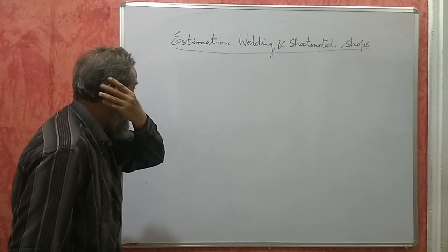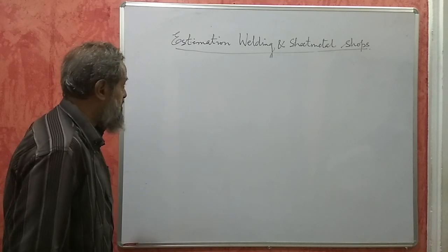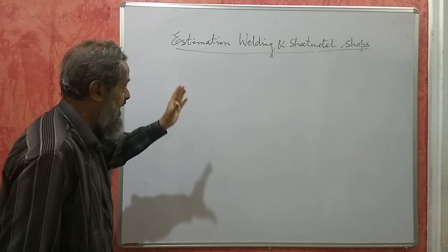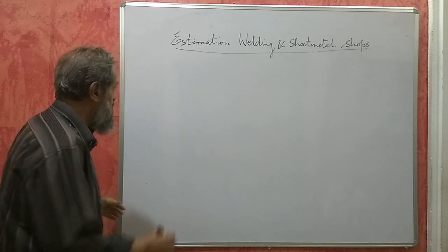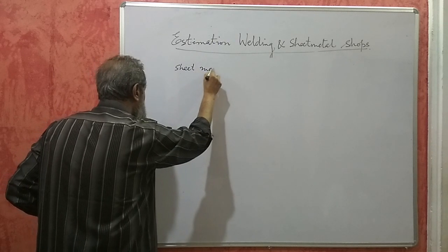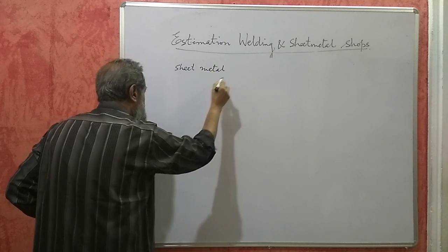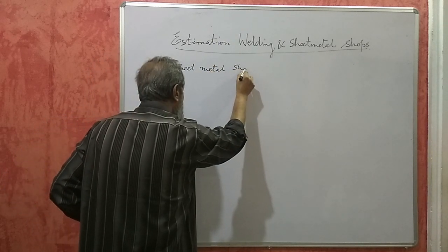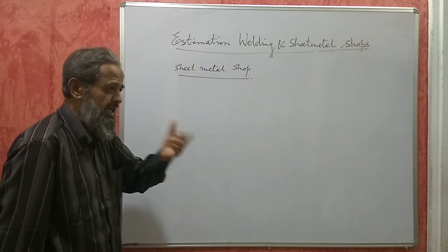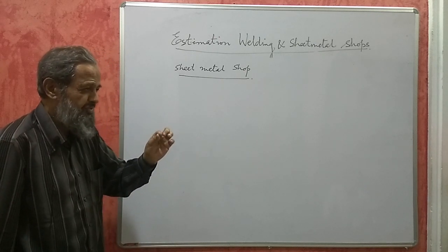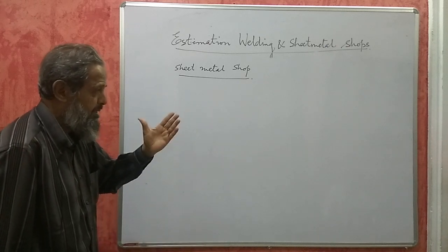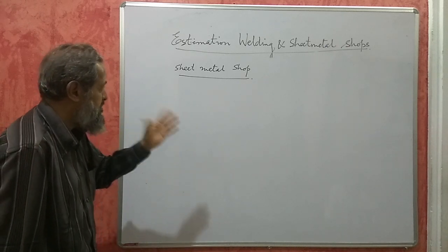Friends, in the previous two videos we did some problems on welding. Now I am going to the sheet metal shop. In sheet metal, we use GI sheet of thickness 1 mm, or it will always be less than 3 mm sheet.